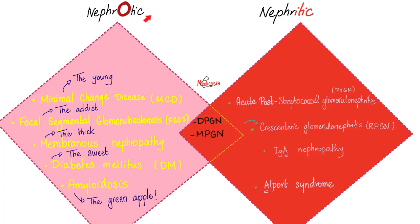Let's review what we have discussed before: nephrotic syndrome, minimal change disease, focal segmental glomerulosclerosis, membranous nephropathy, diabetic nephropathy, amyloid nephropathy. Today we're talking about diffuse proliferative glomerulonephritis, which includes nephrotic and nephritic in the same patient at the same time.